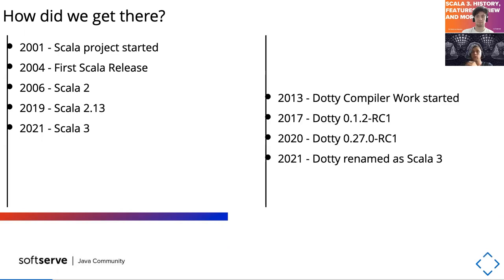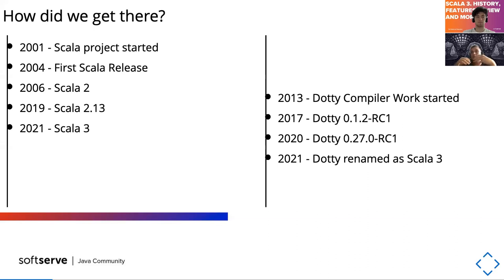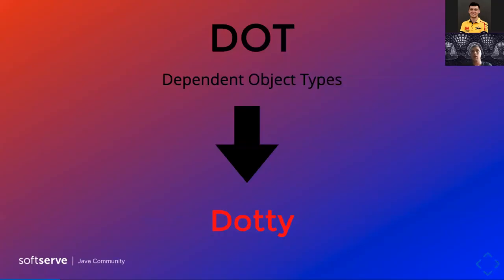The history behind Scala 3 is that development started actually eight years ago, so the Scala 3 compiler is eight years in development. It started as a project called Dotty — we'll see why shortly. This year, Dotty was renamed to Scala 3. The name is derived from the DOT calculus.